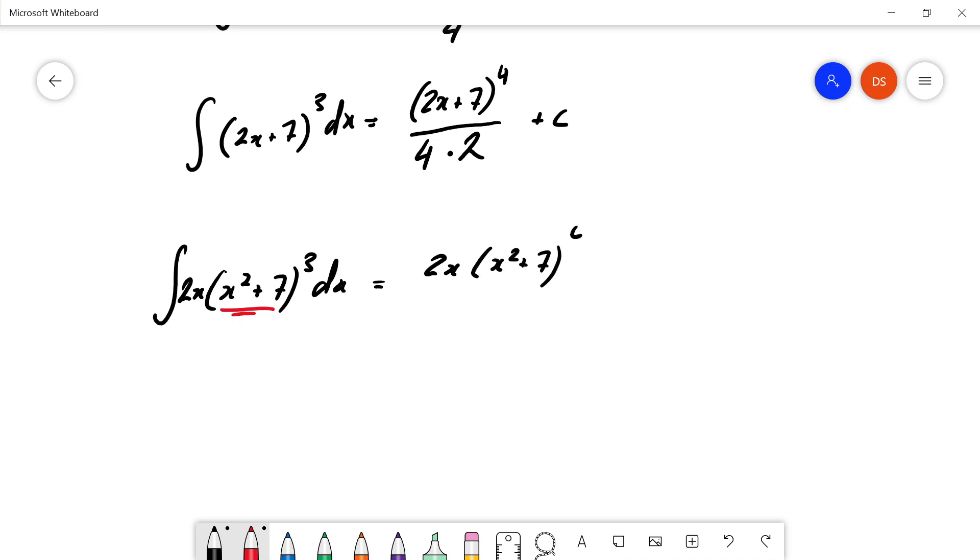We can add one to the power, divide by the new power, and then divide by the derivative of the inside. Notice that this part and this part cancel.